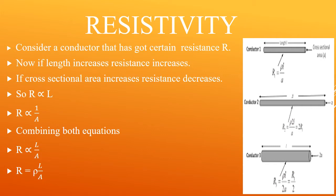We know what is resistance. Now we will see another characteristic, that is resistivity. What is the difference between resistance and resistivity? We will see it mathematically. First, consider there is a conductor. This conductor has got certain resistance R. Suppose we have taken double the length — if we increase the length of the conductor, resistance also increases.